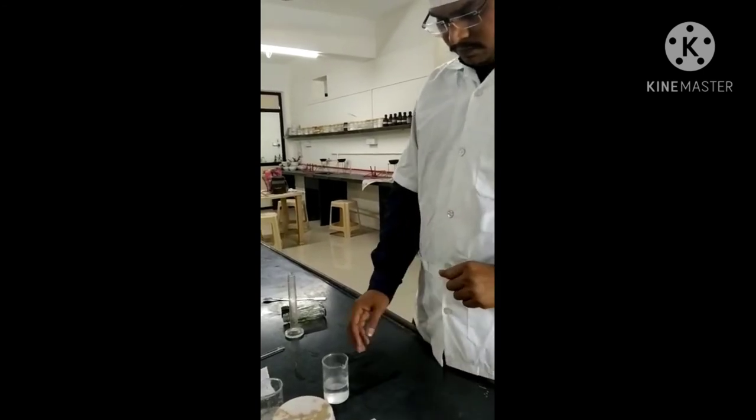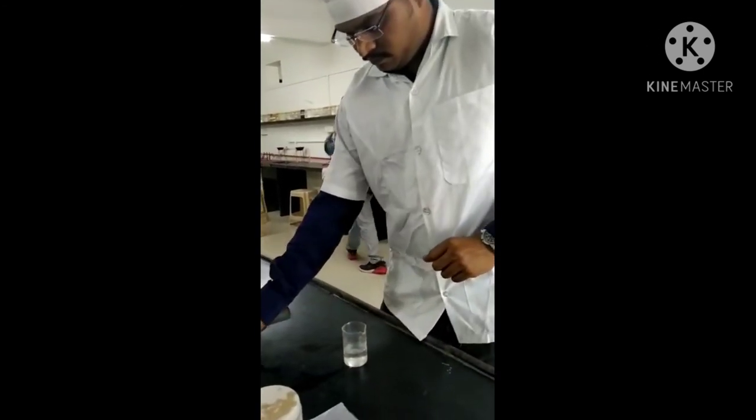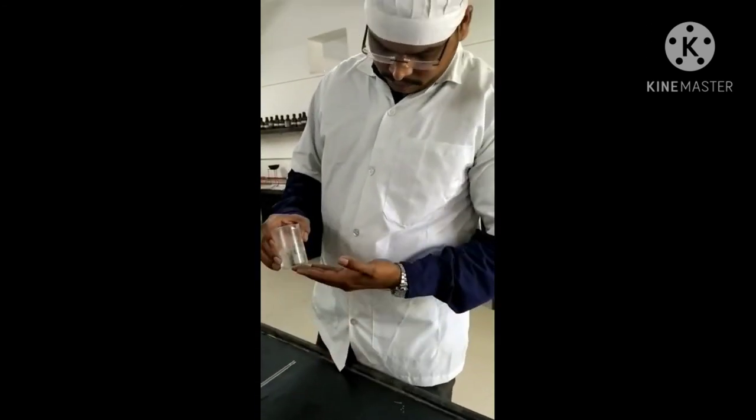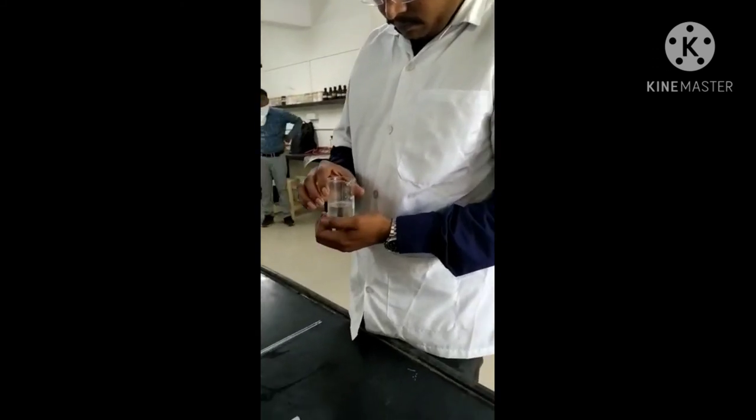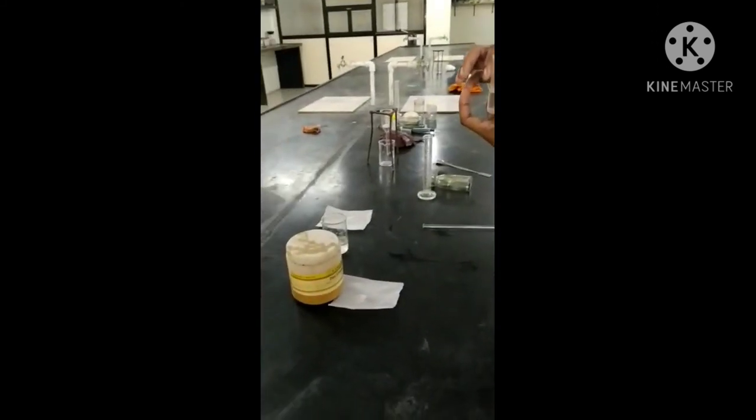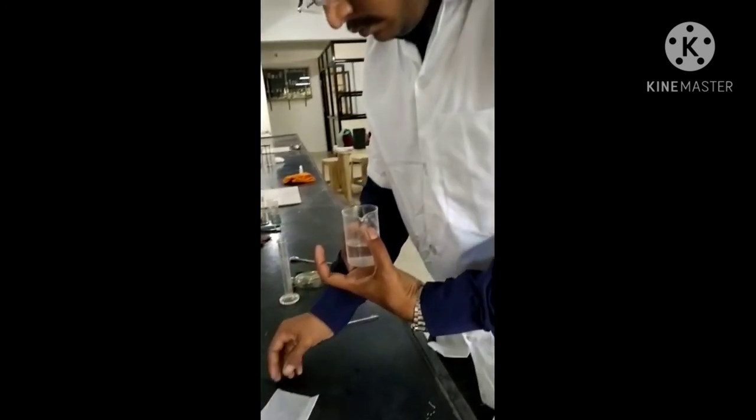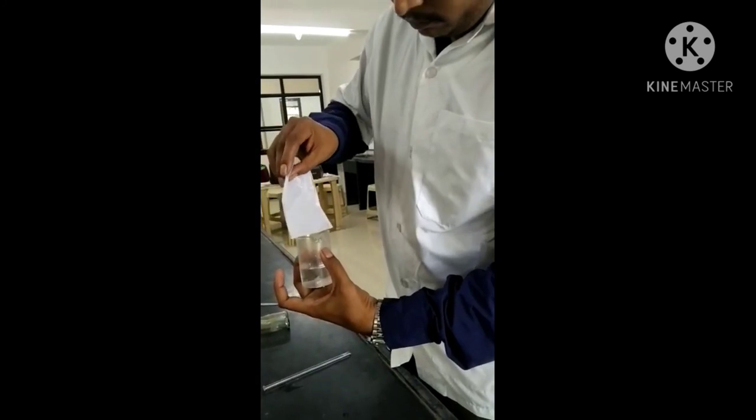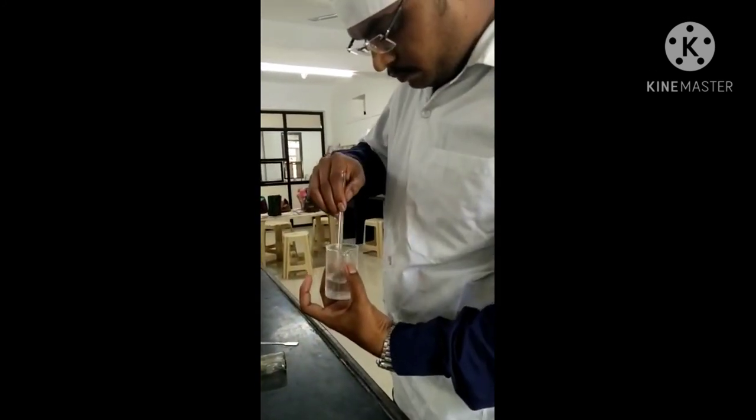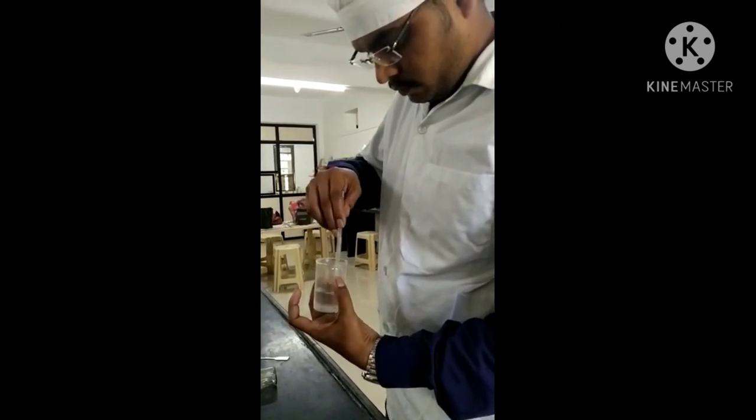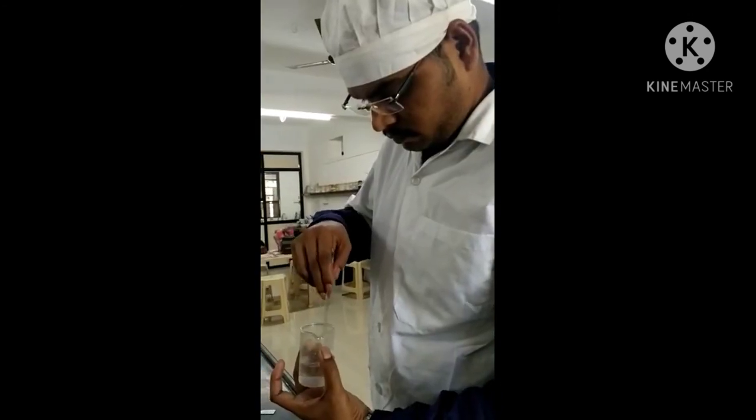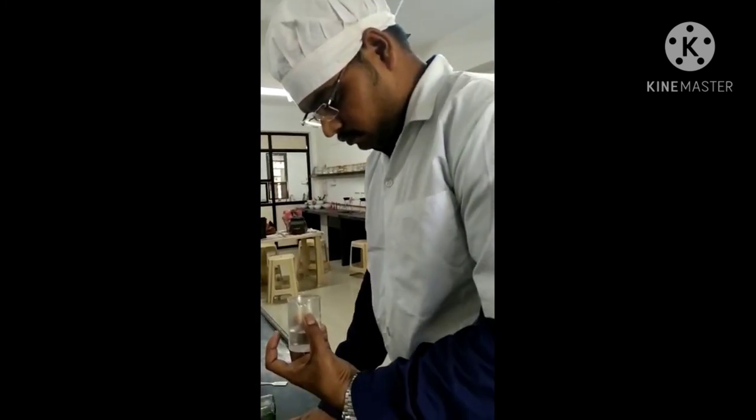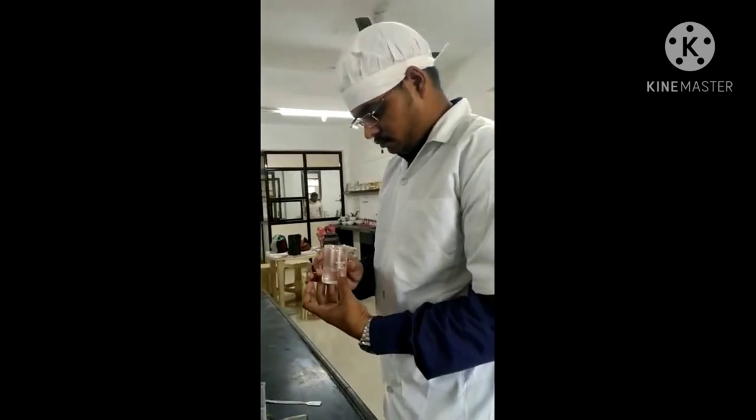Now start with the Procedure. Let's start with the Procedure of eye lotion. In that, first we take freshly boiled and cooled water. In that, we add zinc chloride and dissolve that zinc chloride in boiled water properly with the help of stirrer. After dissolution of that zinc chloride in that beaker, filter that solution through sintered glass filter.